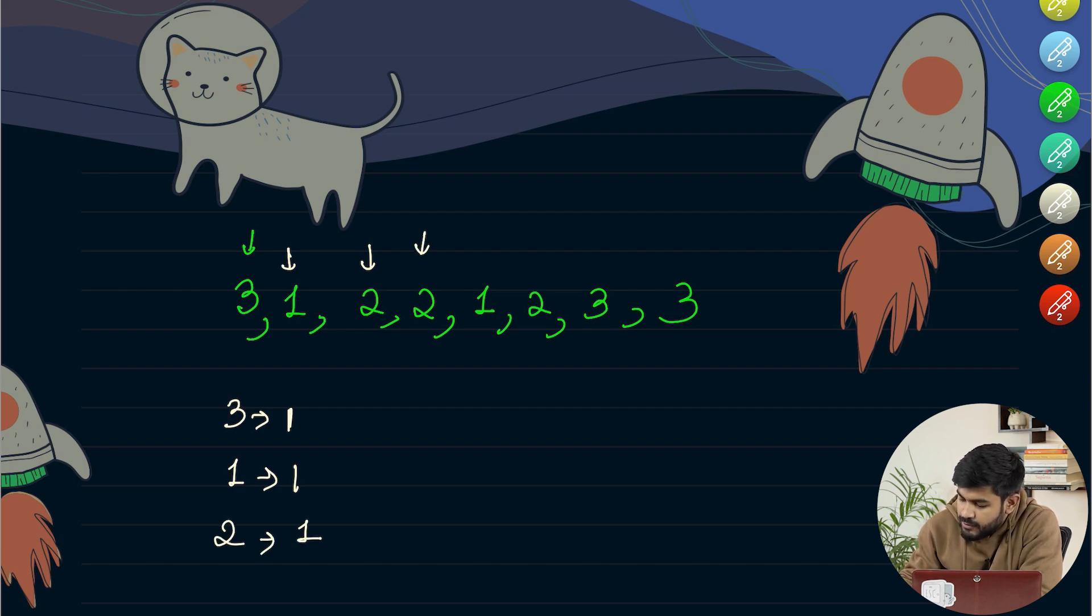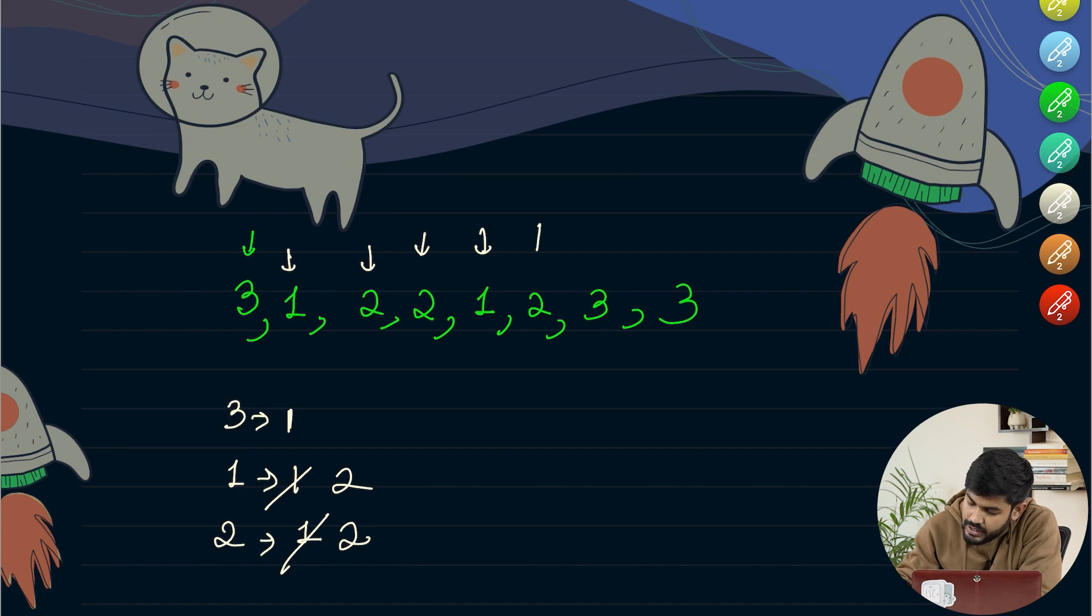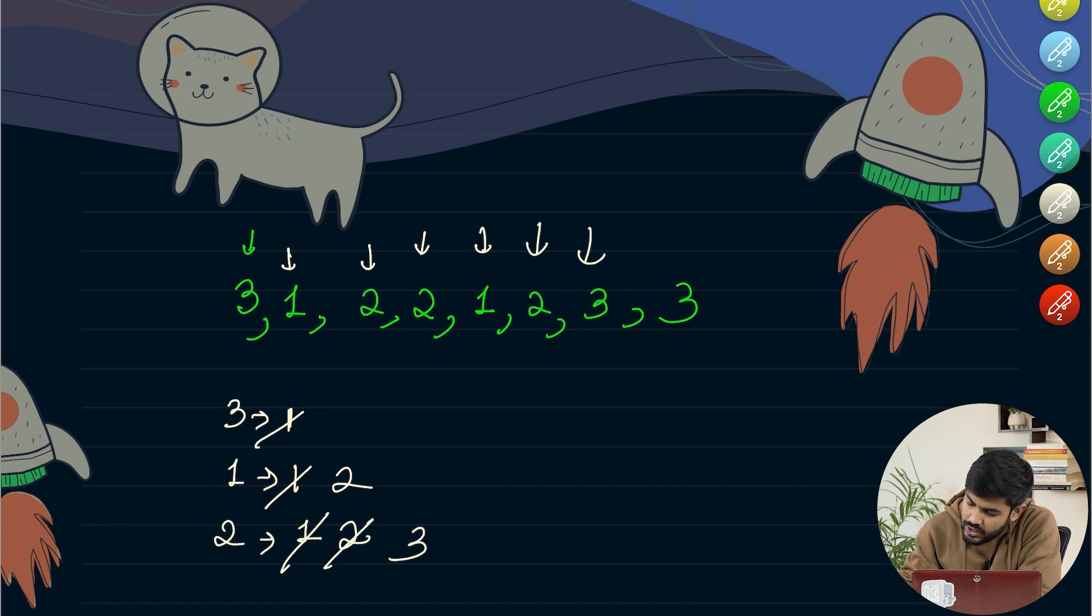Then we have 2 again, it is already seen so we would just increment the count. Then we have 1, we have again seen it so we would increment the count, then we have 2, we would increment the count, then we have 3 and we would increment the count, and then we have 3 again so we would increment the count.